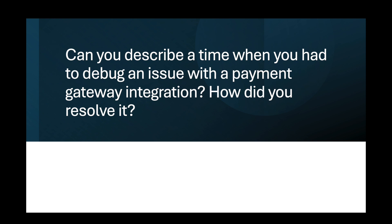I found that our timeout settings were relatively short, causing the server to give up on an API request prematurely, especially under heavy load. Additionally, our retry logic was not robust enough to handle these temporary failures effectively, leading to dropped transactions rather than retrying them with a delay. To address the issue, I implemented several key changes: I adjusted the timeout settings for our API requests, allowing more time for Stripe's API to respond during peak traffic. I also enhanced our retry logic by implementing an exponential backoff strategy.